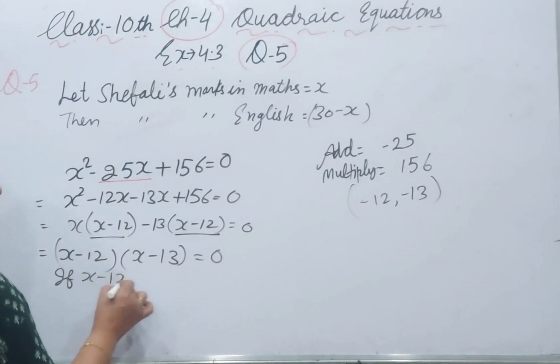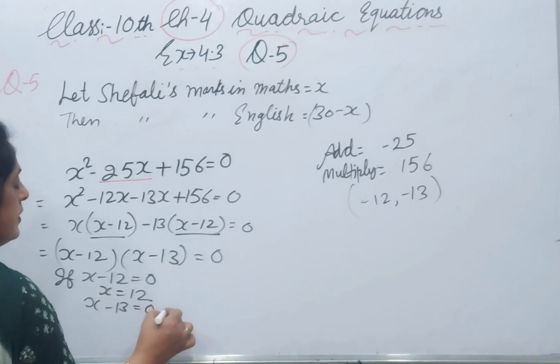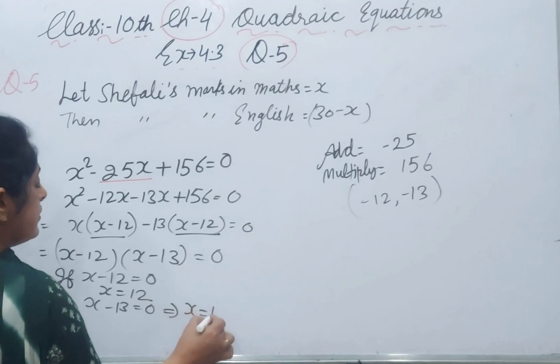If x minus 12 equals 0, x value is 12. If x minus 13 equals 0, that gives x equals 13.